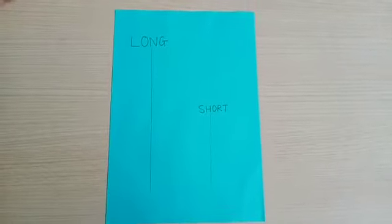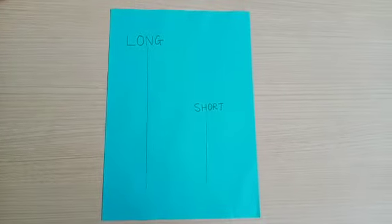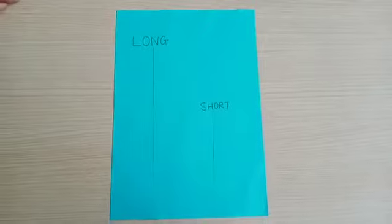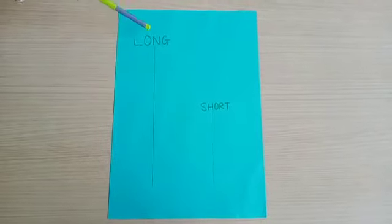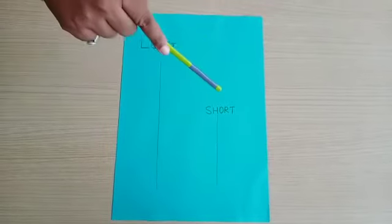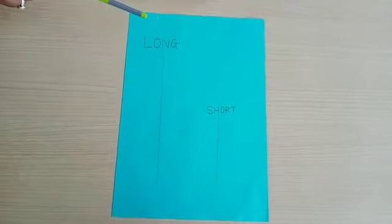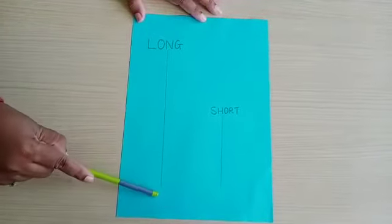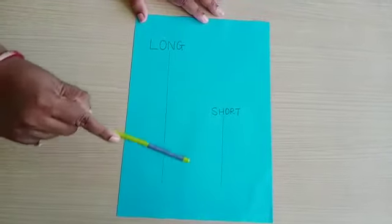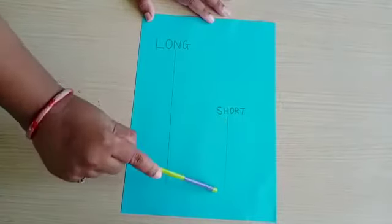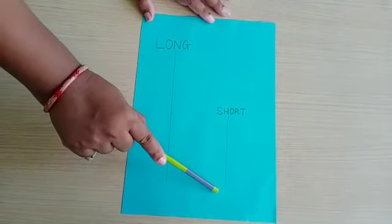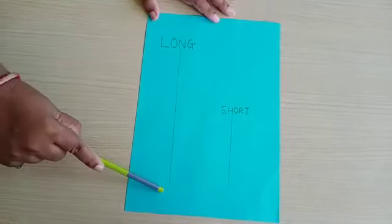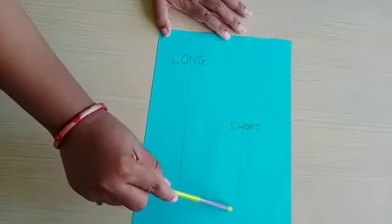Hello children, today we are going to learn the concept of long and short. Long means lamba and short means chota. Long means lamba, short is chota.